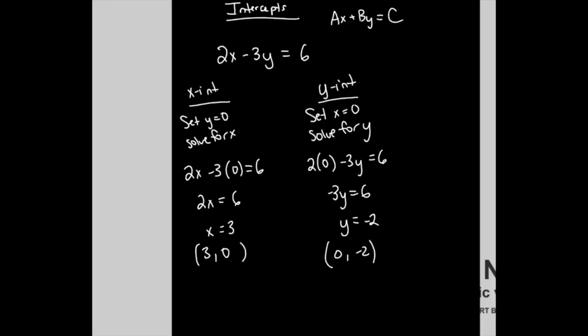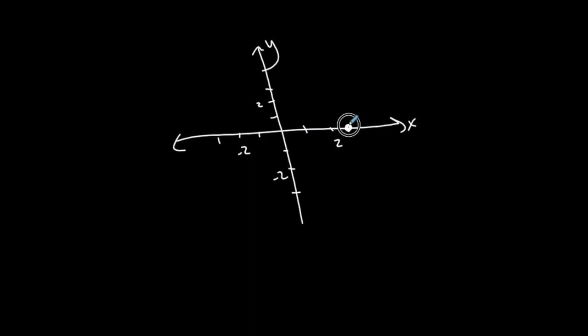My x-intercept is three, zero. So this is a point on the x-axis. My y-intercept is zero, negative two. Connect these dots. I'm done.